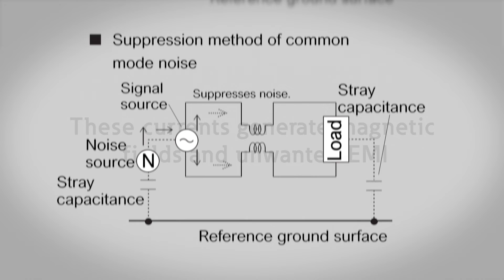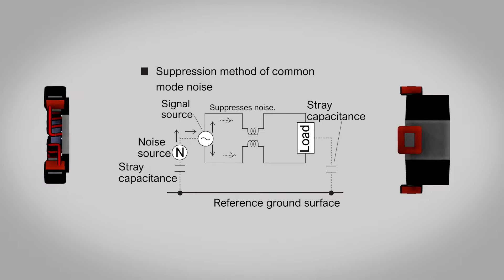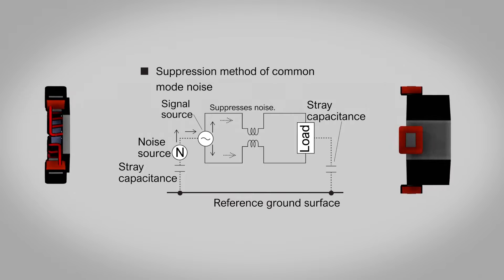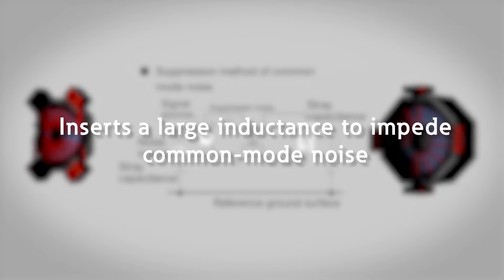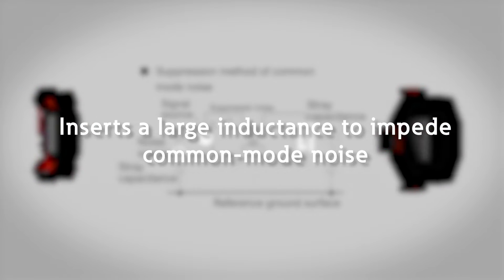In this case, common mode chokes are employed. Often composed of a toroidal ferrite core wrapped with two independent coils of the same size and number of turns, common mode chokes are four-terminal components that essentially insert a large inductance in series with common mode sources. This significantly impedes common mode noise while having minimal effect on the desired signal.